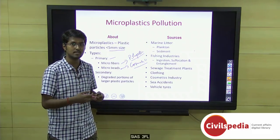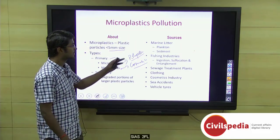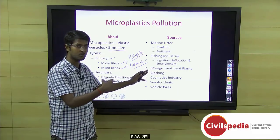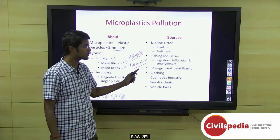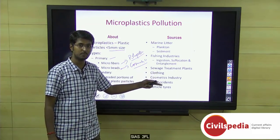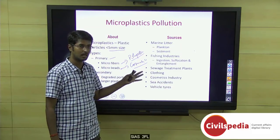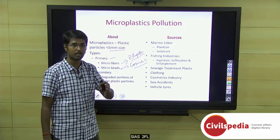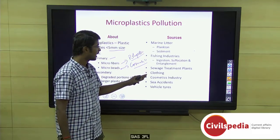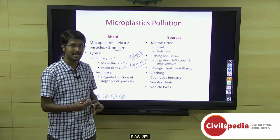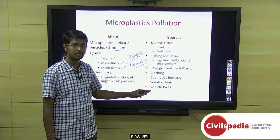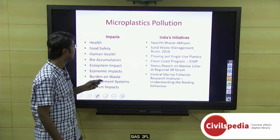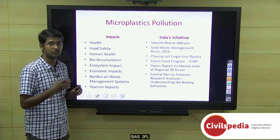Sources include marine litter, the fishing industry causing ingestion, suffocation, or entanglement of animals, and sewage treatment plant sludges processed into fertilizers — when used in agriculture, water runoff carries microplastics back into rivers, ponds, or the ocean. Clothing (microfibers and microbeads), sea accidents, and vehicle tires are also major sources. In Scandinavian countries like Norway, Sweden, and Finland, vehicle tires are one of the major sources of microplastic pollution.